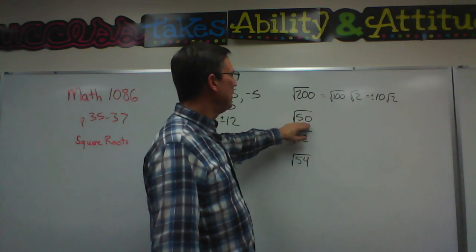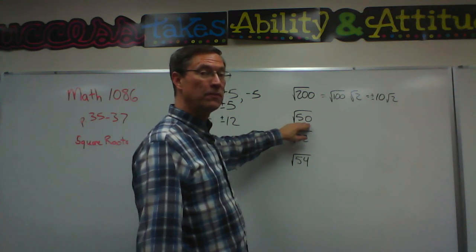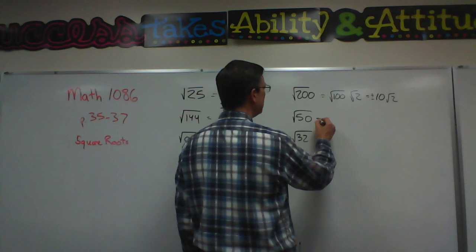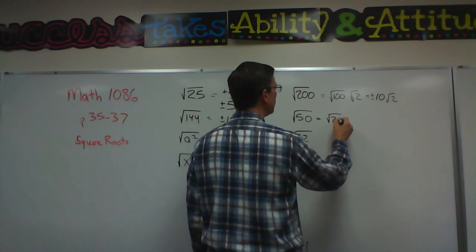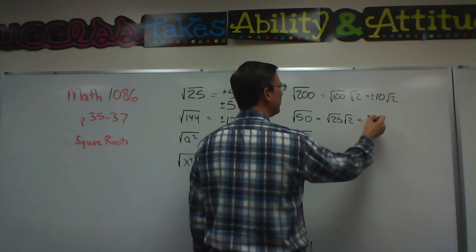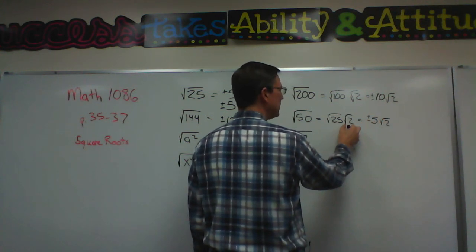Now the 50 is 25 times 2. So we can split this and say the square root of 25 times the square root of 2. The square root of 25 is 5. And then we just keep the square root of 2.